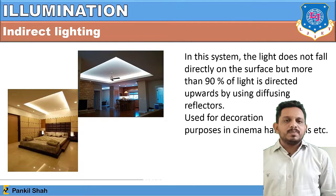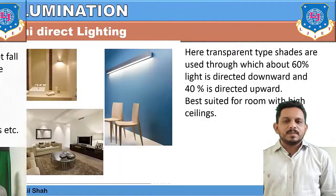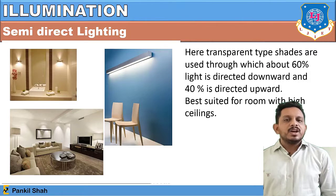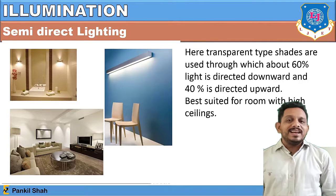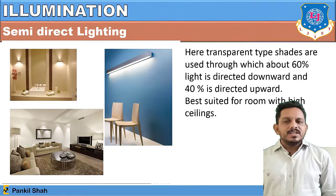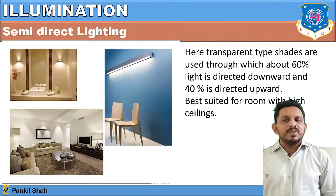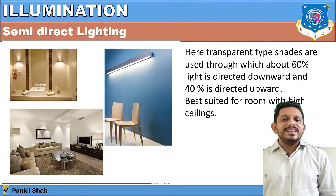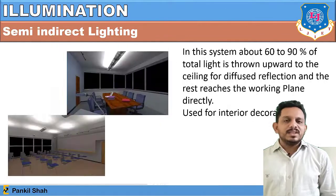In semi-direct lighting, transparent type of shades are used through which some percentage of light is directed downwards and about 40 percent is directed upwards. Some amount of light goes downward and some is reflected upward via the reflector. This lighting is best suited for places where the ceiling is very high.